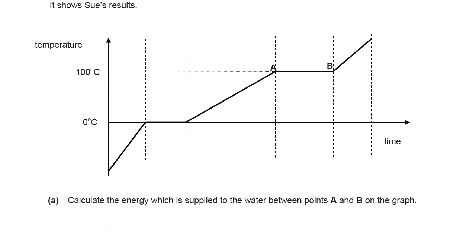You're asked to calculate the energy which is supplied to the water between points A and B on the graph. This is a question where you're going to need to go to the front of the exam paper and find yourself an equation. It's a calculation one. You're looking for an equation that can let you calculate the energy with the data that you've got.